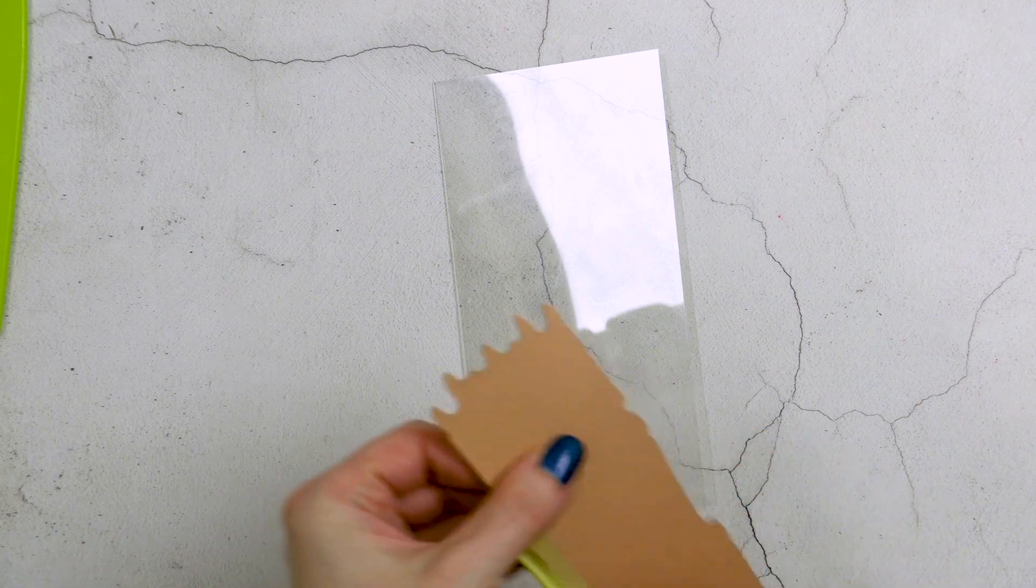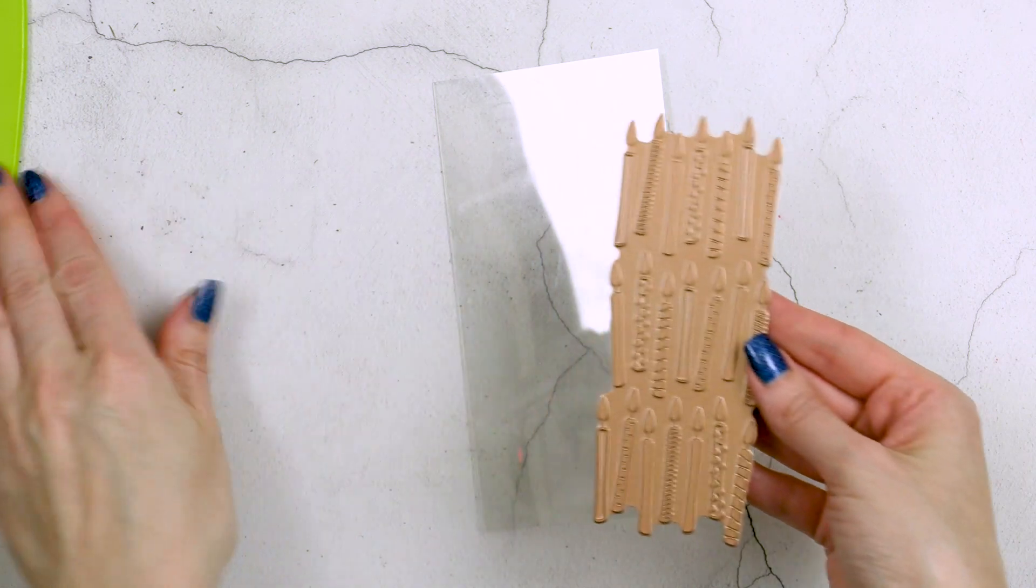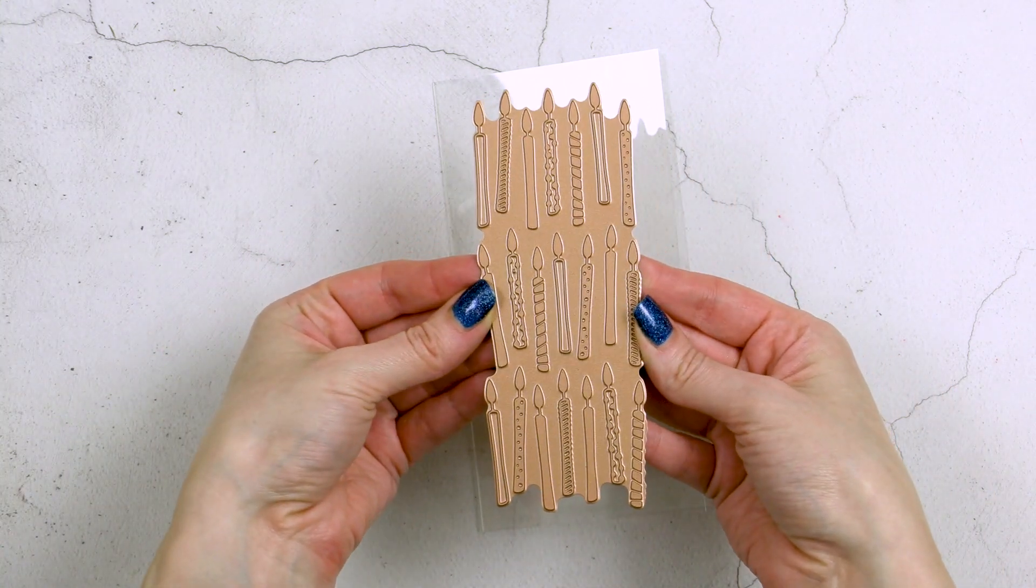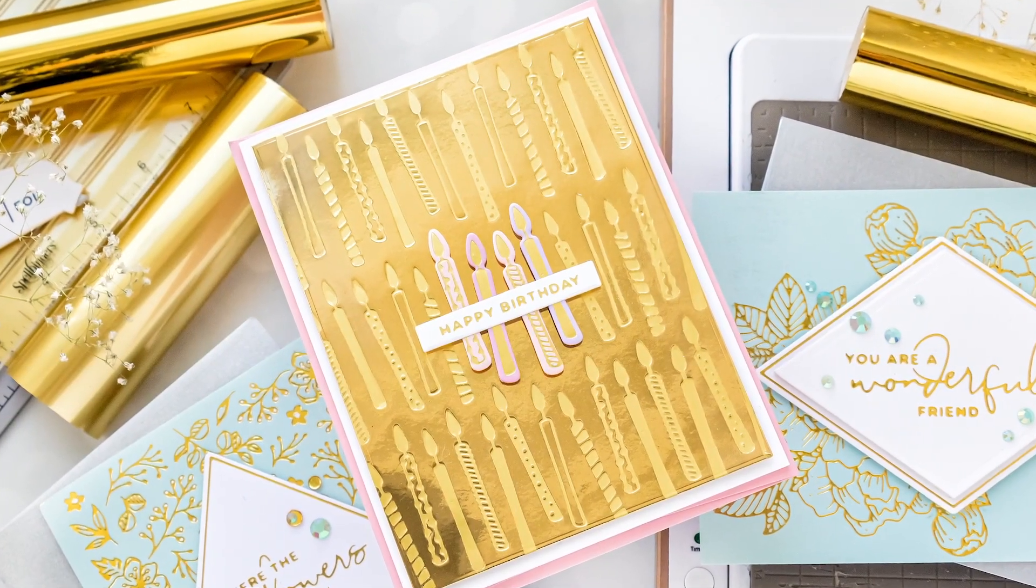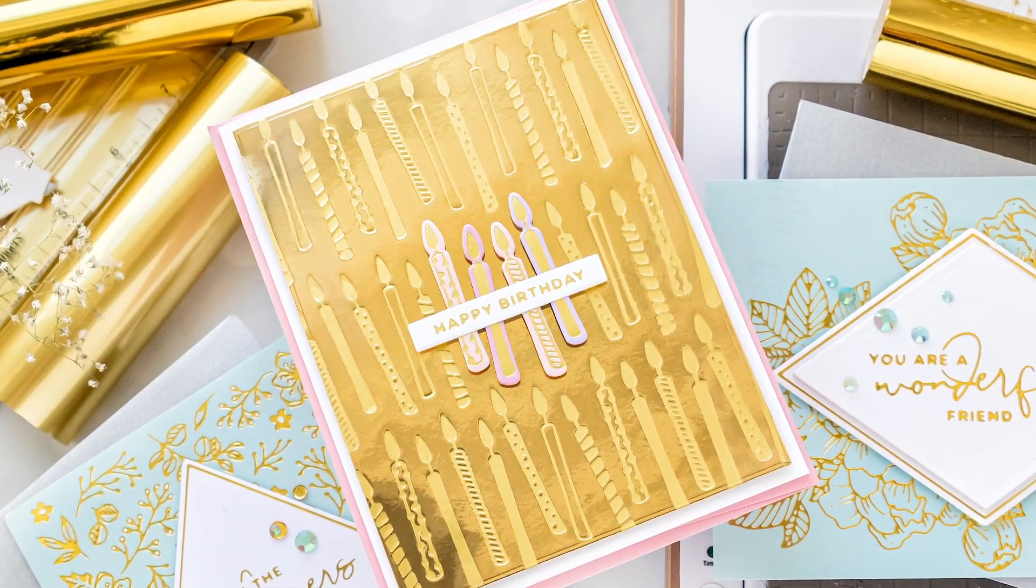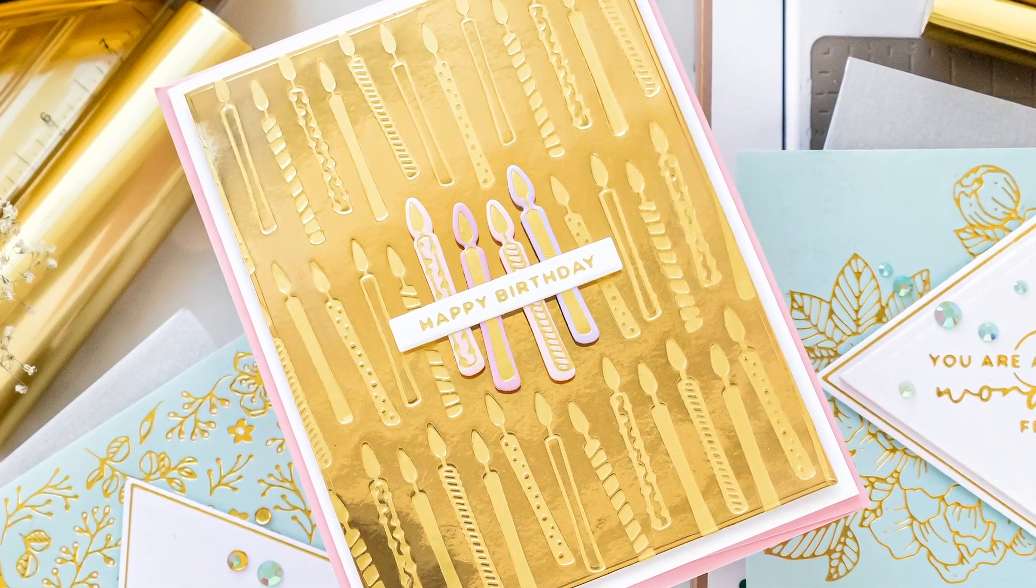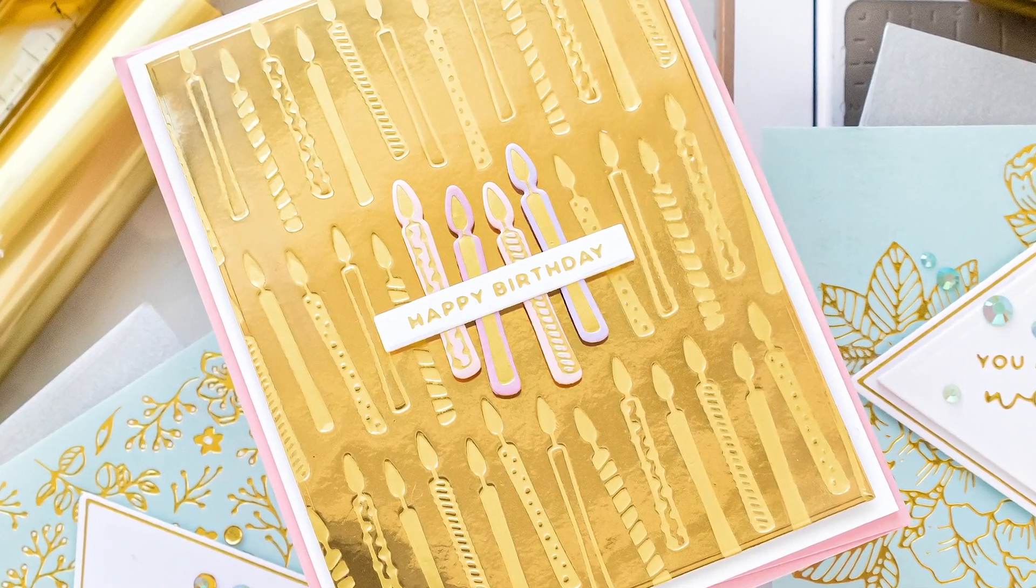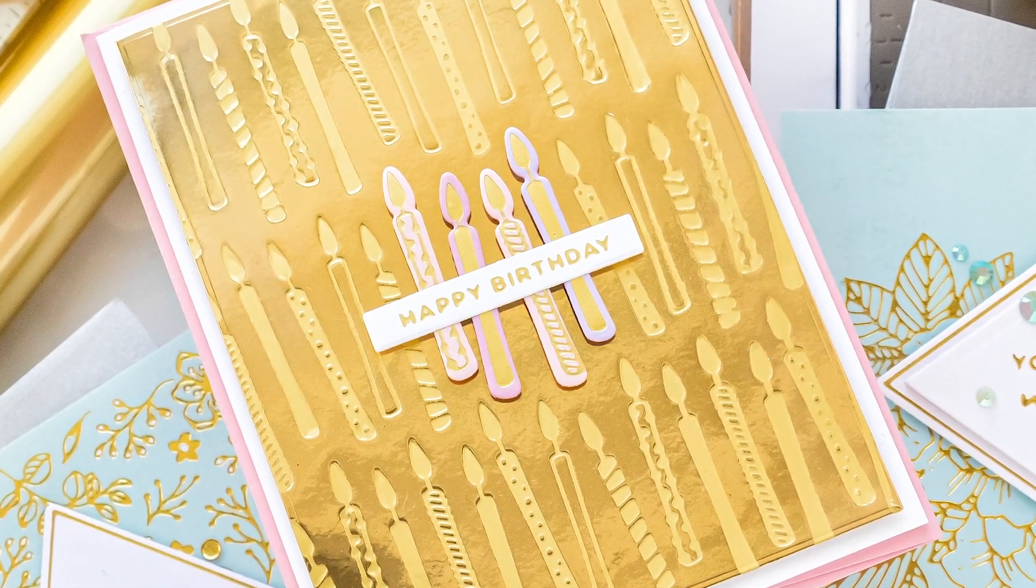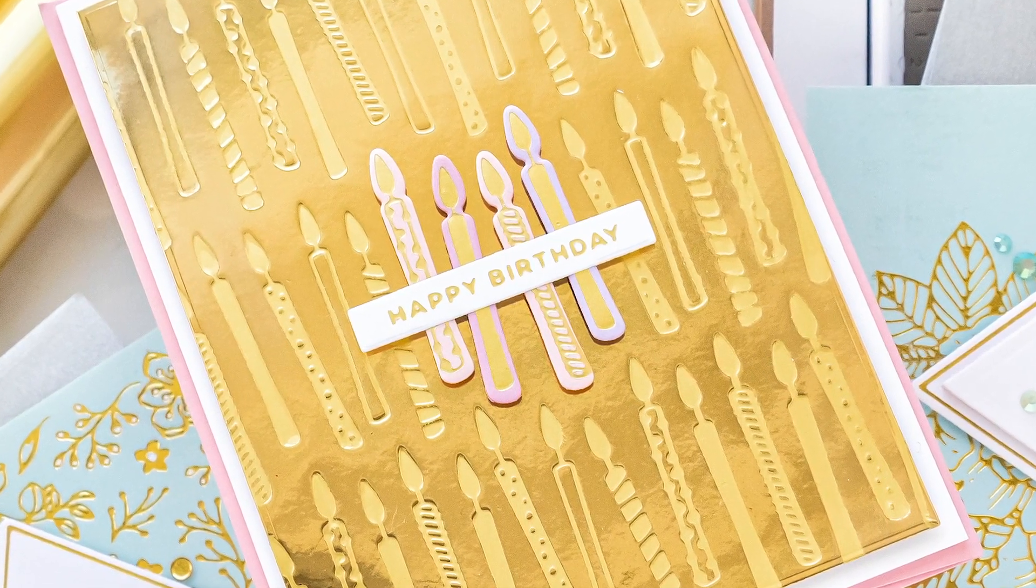To create my birthday card I'm going to use a new glimmer plate from Spellbinders. This is a birthday candle background plate from my latest blooming birthday collection. I'm going to foil this in the center of my clear card base. Now this background plate was originally designed as a half background to create a full card background for an A2 card. So if you were to make an A2 card, one that measures 4 1/4 by 5 1/2 inches, you would foil this background twice and it would give you a full card background.